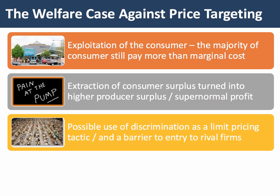Many firms use price discrimination as a form of barrier to entry in markets. They may deliberately cut the price to some consumers — for example, to a limit price, just making normal profits, maybe even less — deliberately to try and inflict some commercial damage on a potential rival or an existing firm. So some forms of price discrimination are effectively a form of barrier to entry.